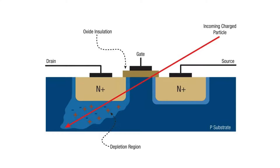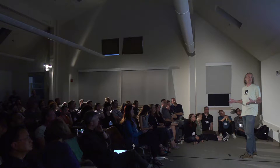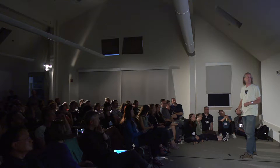What radiation does is it passes through semiconductors — that's an example of a transistor — and upsets the charge in the device. Typically a zero becomes a one when extra charge is inserted into that device, and that's a fault which then reflects onto the cryptography.